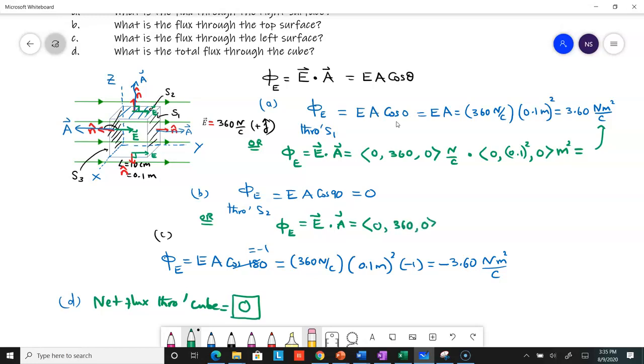Your vector E is (0, 360, 0) newtons per Coulomb dotted with the area vector. The area vector for the top is along the z-axis, so it's (0, 0, 0.1 squared) meters.